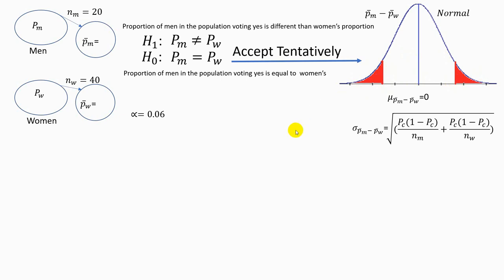We take two samples. In the sample from the population of men, 14 out of 20 report they will vote yes. In the sample from the population of women, 20 out of 40 report they will vote yes. So the proportion of men voting yes in the sample is 0.7 and the proportion of women is 0.5, which is not consistent with the null hypothesis that says the two proportions are the same — we would expect the sample proportions to be close to each other.